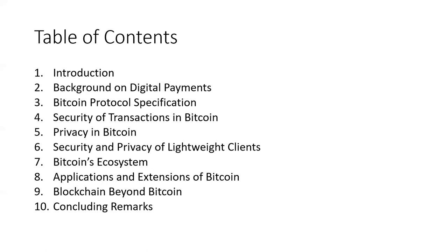Chapter five covers privacy in Bitcoin. It takes a look at user privacy and privacy quantification. It talks about ways in which attackers can exploit Bitcoin clients to discover information about who's doing transactions. It talks about behavior-based analysis and coin-tainting. It also looks at network layer attacks — how there can be privacy leakage over the Bitcoin network. And it takes a look at some of the different proposals for enhancing privacy in Bitcoin, such as mixing services, CoinJoin, protocol enhancements, as well as Zcash and Zerocoin.